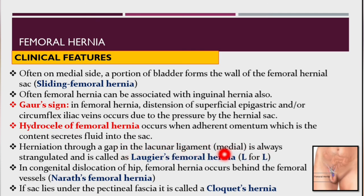Herniation through a gap in the lacunar ligament is always strangulated and is called Laugier's femoral hernia — 'L' for lacuna. In congenital dislocation of the hip, femoral hernia occurs behind the femoral vessels and is called Narath's femoral hernia. If the hernial sac lies under the pectineal fascia, it is called Cloquet's hernia.